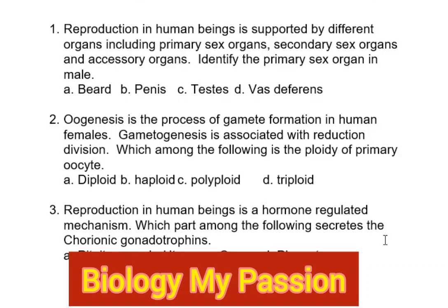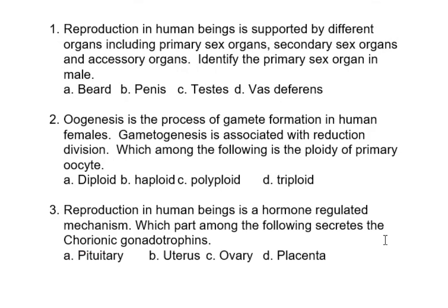Welcome to Biology My Passion. Today we will see a few multiple choice questions from the chapter Human Reproduction. First question: reproduction in human beings is supported by different organs including primary sex organs, secondary sex organs, and accessory organs. Identify the primary sex organ. The primary sex organ is the organ in which the gametes are formed.